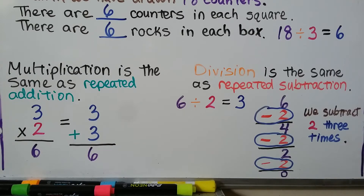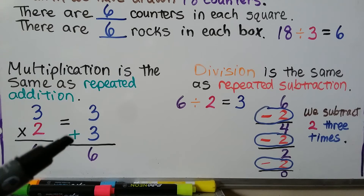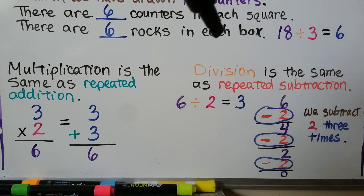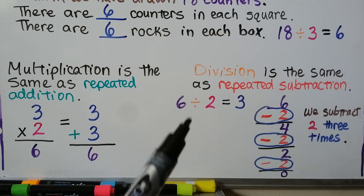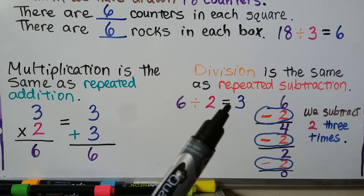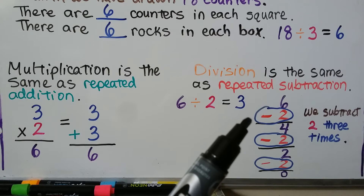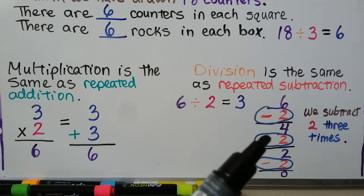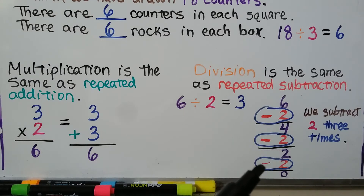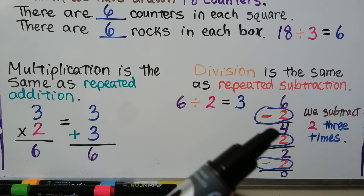We learned in Chapter 5 that multiplication is the same as repeated addition — 3 times 2 equals 6, same as 3 plus 3. Division is the same as repeated subtraction. 6 divided into 2 equal groups equals 3. We can subtract 2 three times: 6 minus 2 equals 4, minus 2 equals 2, minus 2 equals 0. We've used them all, and we subtracted 2 three times.